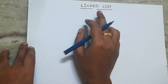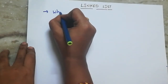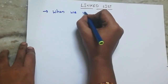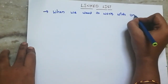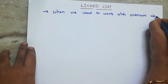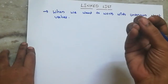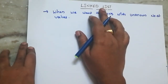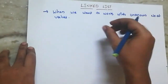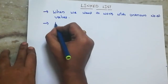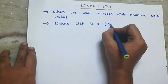So first, linked list is used when we want to work with an unknown number of values. We have to work with an unknown number of values. So what is a linked list? Linked list is a linear data structure.